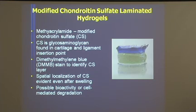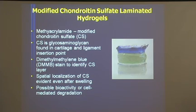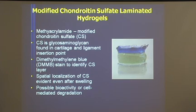The other example is the spatial placement of particular bioactive factors. In this case, we focused on an extracellular matrix molecule called chondroitin sulfate, which is found particularly at that interface in the fibrocartilaginous region. We modified it to allow it to cross-link into a hydrogel and layered it — so this is a pure OPF gel, and this layer contains chondroitin sulfate. Staining with a dye that has affinity for chondroitin sulfate, we can see spatial organization where we are able to localize a particular matrix molecule in one area of the sample.